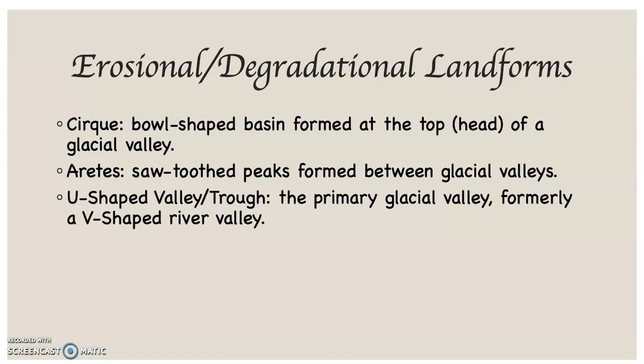The U-shaped valley, also called a U-shaped trough or glacial trough, goes by a lot of different names. This is the primary glacial valley. It was formerly a V-shaped river valley, but through plucking and abrasion, the glacier has hollowed this V-shaped valley out into a big U-shaped valley.